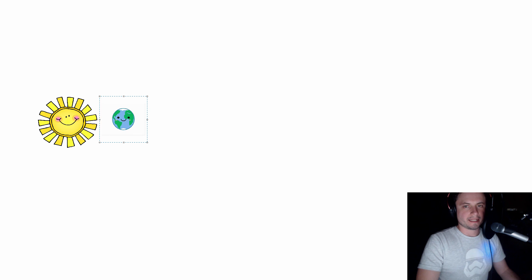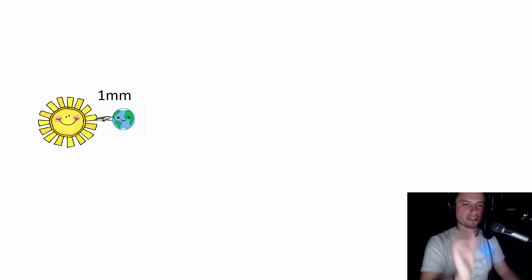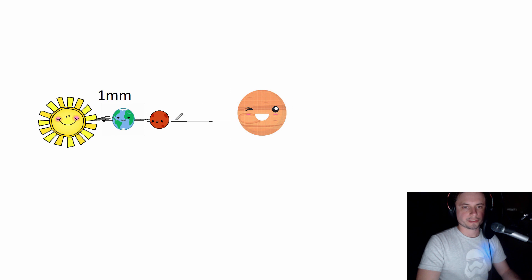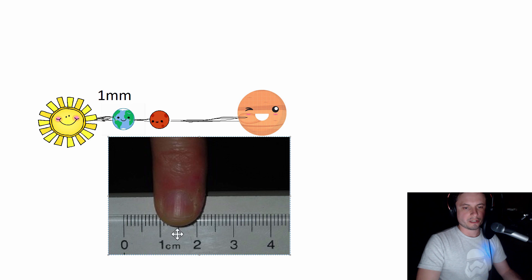So in other words, if this right here is our Sun, then Earth is exactly one millimeter away from it. The distance between them is a minuscule one millimeter, which is tremendously, tremendously small. Let's place Mars about a millimeter and a half away, and about five millimeters away is going to be Jupiter. Here's a human finger showing you how big one centimeter is — we are at only five millimeters, which is half that distance, and this is the distance from the Sun to Jupiter.